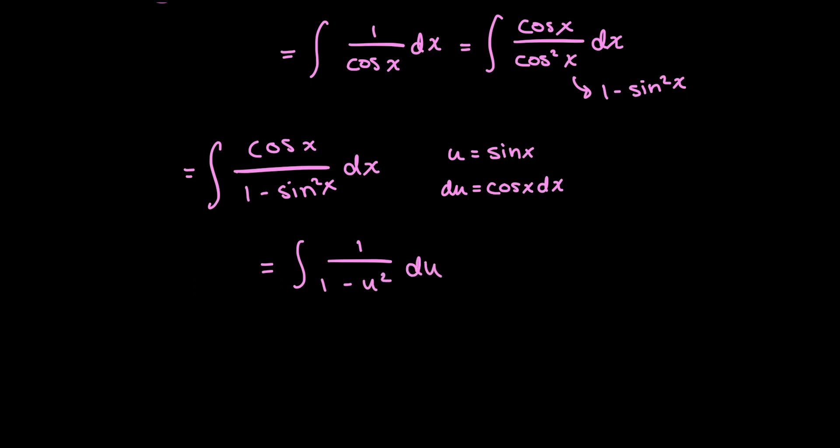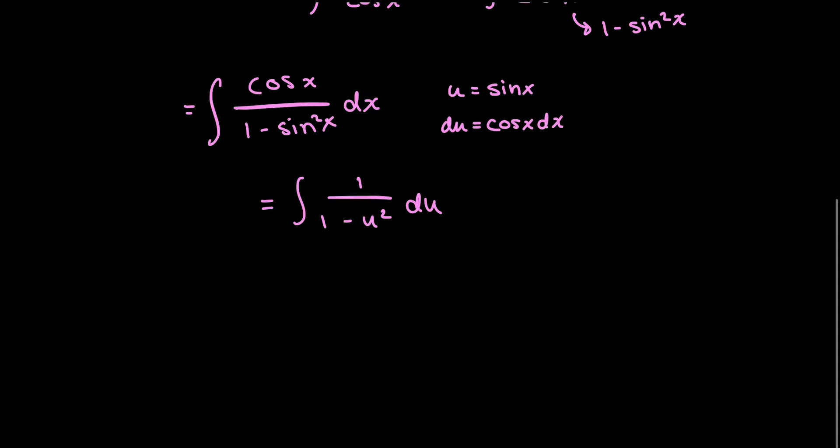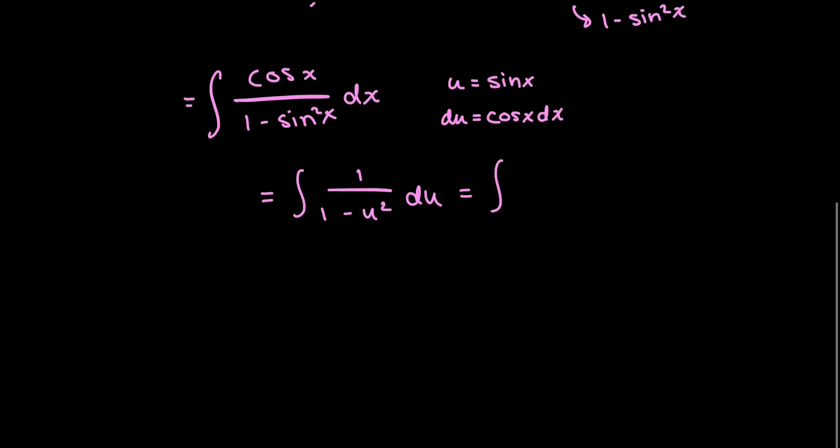Now this is something that I could actually integrate. This is going to be a partial fraction decomposition problem. So let's factor the denominator. I have 1 over 1 minus u times 1 plus u du.